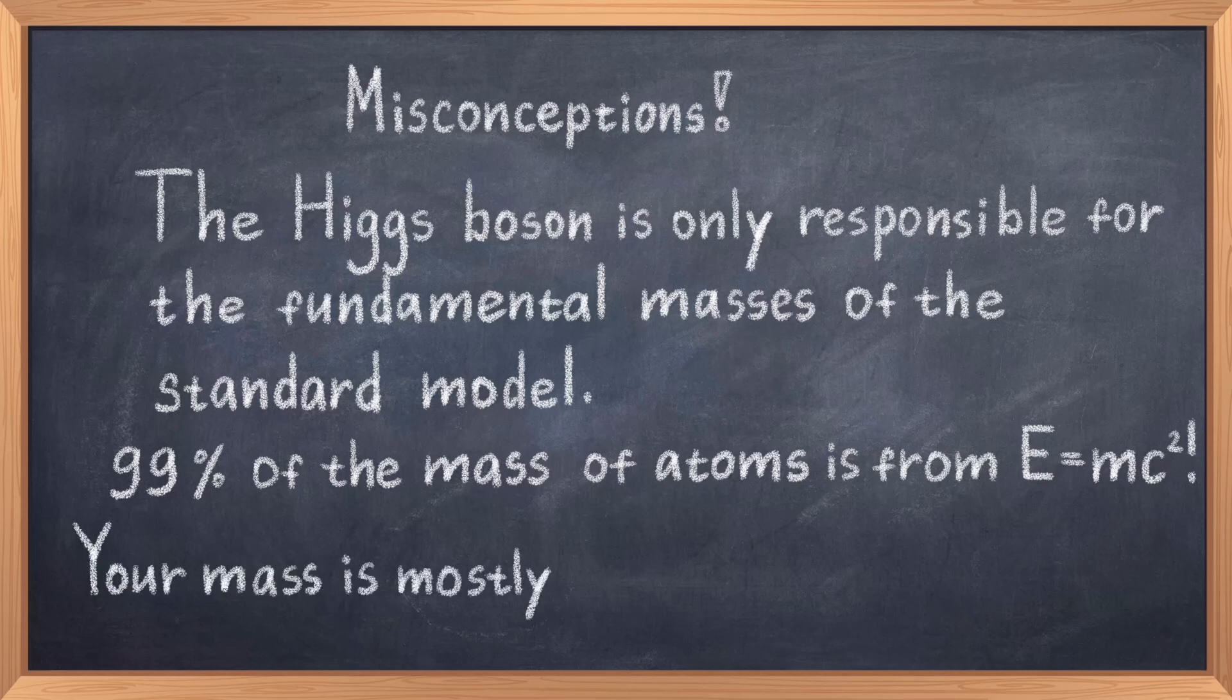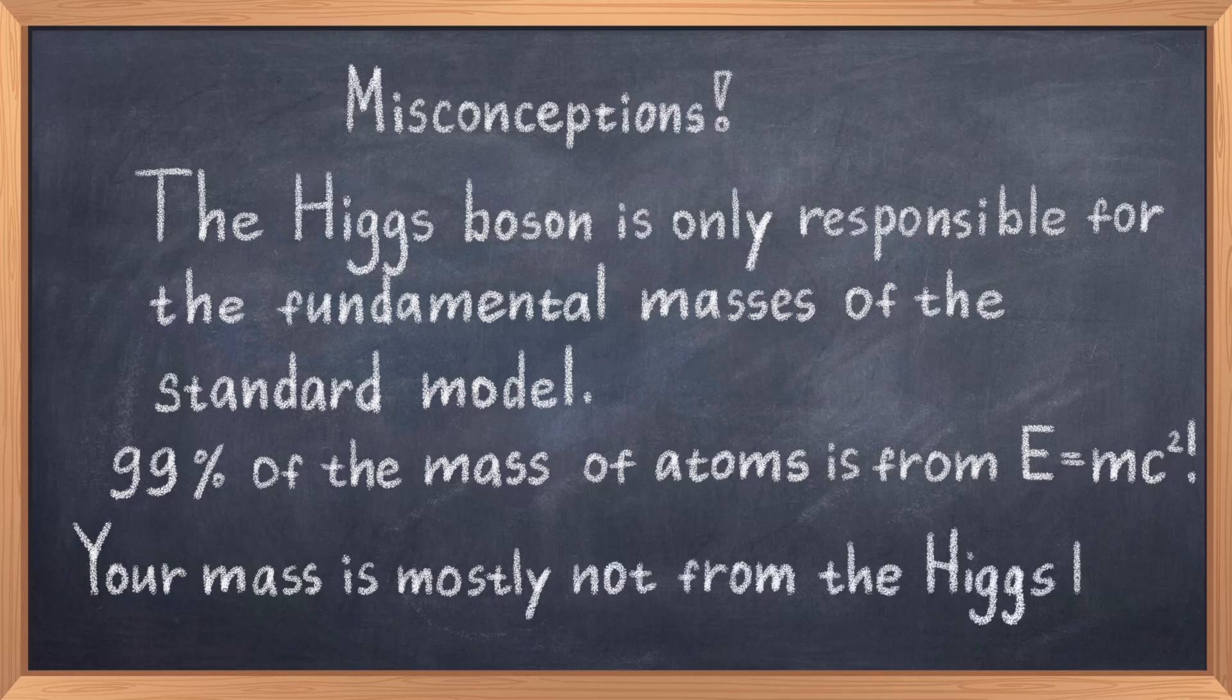but from the energy of the quark-gluon interactions in the proton. This is because these interactions are very energetic, and using Einstein's famous equation E equals mc squared, most of the mass comes from this energy and not from the quark masses.